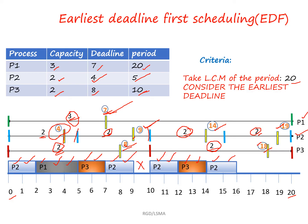In the Earliest Deadline First scheduling algorithm, processes are allocated in the scheduling based on the earliest deadline. This is called the Earliest Deadline First scheduling algorithm. Thank you for watching.